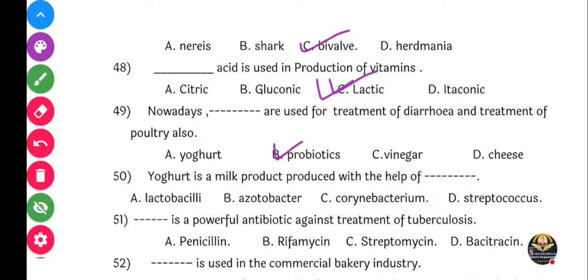Next question: Yogurt is a milk product produced with the help of dash. Yogurt koanthya microorganism cha aadhaare taayar kele zaata? Correct answer: that is Lactobacillus, option A. Yes, Lactobacillus correct ahe.